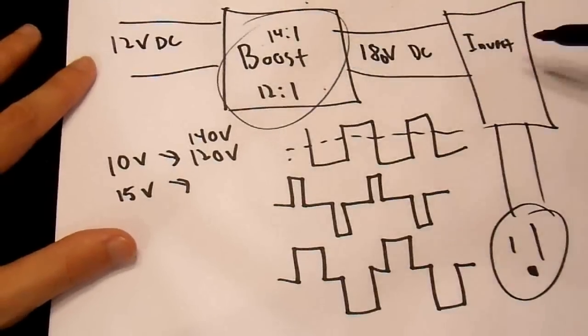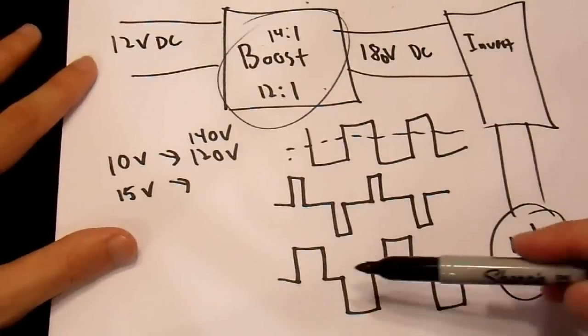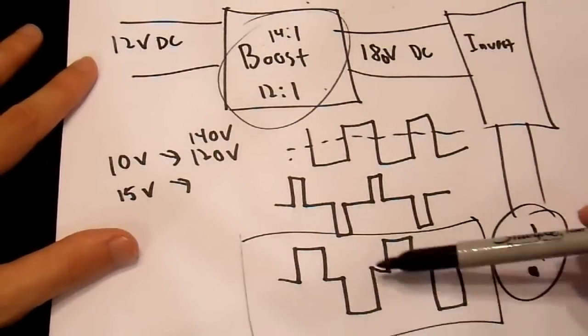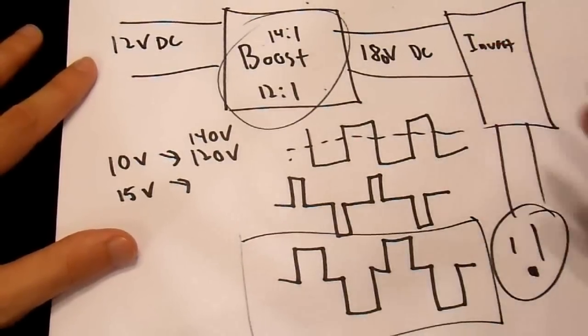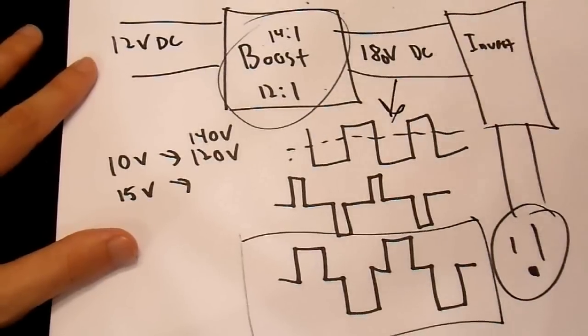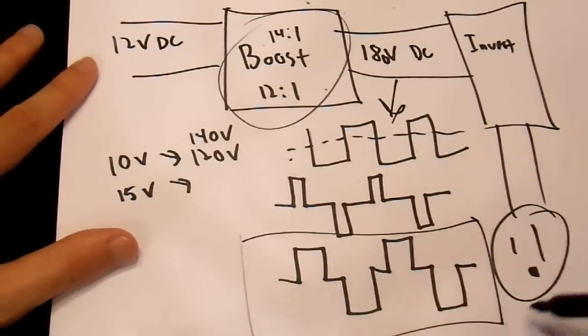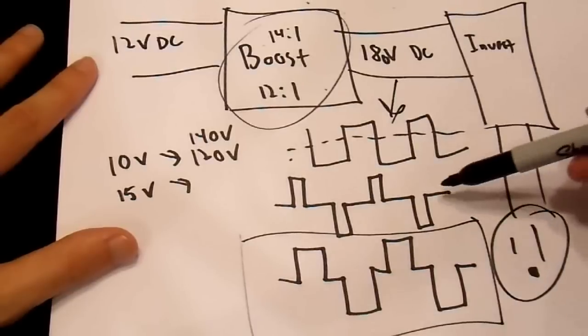It means that it varies this boost stage and the invert stage so that you get a waveform that is consistent. And it always looks like something like this, except in the extreme cases. If you load it very heavily, you still could get a waveform that looks like this. But it does try, at least, to correct it, to look something like this. Then you don't get this, and you don't get this. You get something that is a much better approximation to a true sine wave than either of these.